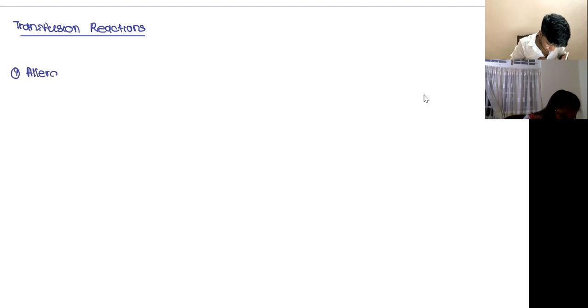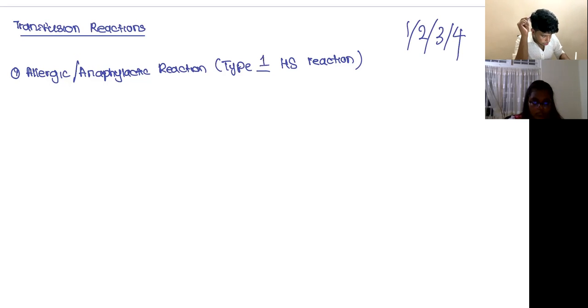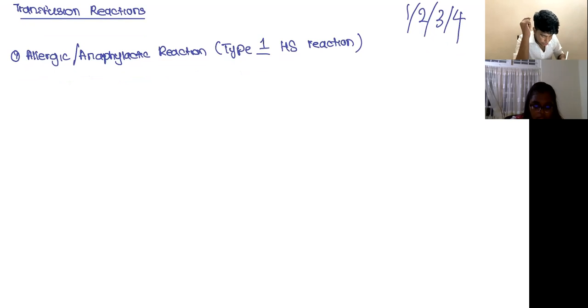This is a type blank hypersensitivity reaction. What is the blank? Allergic reactions are type what hypersensitivity reactions? It's a type one hypersensitivity reaction. What happens here is, you have the donor's blood. And inside the blood, you have plasma proteins.